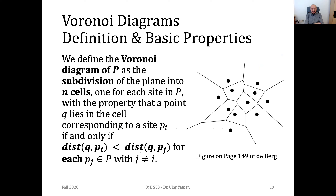Now we have a formal definition of the Voronoi diagram. We define the Voronoi diagram of P, where P is a set of distinct Voronoi points on the plane. The Voronoi diagram is the subdivision of the 2D plane into cells. We have n number of cells, equal to the number of points on the plane — meaning for each Voronoi site we have exactly one cell. Some cells are unbounded, going to infinity, while others may have limited, bounded regions.